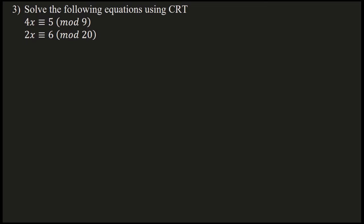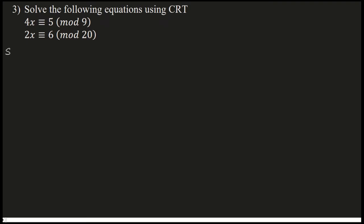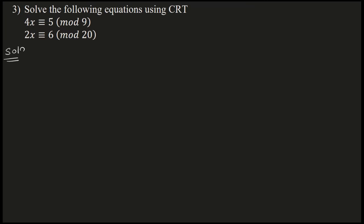You are given two congruent equations. According to the rule — in the previous two classes, we studied congruent equations and their solutions. But in those previous examples, your LHS had only the variable x. Now, your congruent equations are associated with coefficients — here 4 and 2. The first aim is to convert this to standard form.